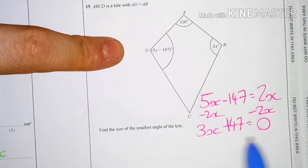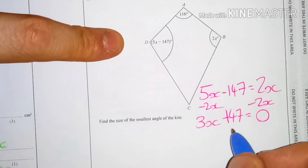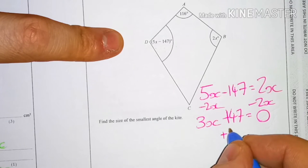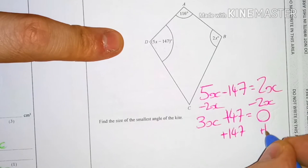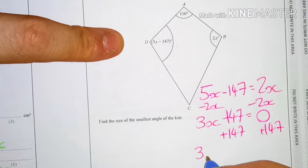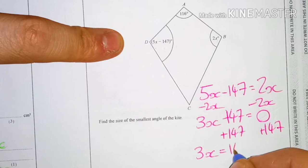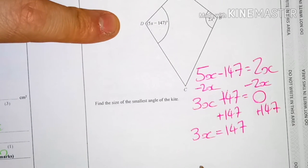2x minus 2x is zero. This 147, because I need to get rid of it and it's already negative, I need to plus 147 from both sides, which means I've got 3x equals 147.